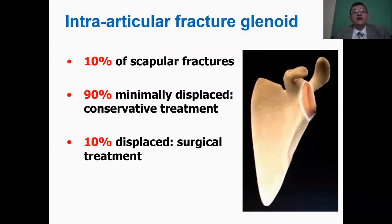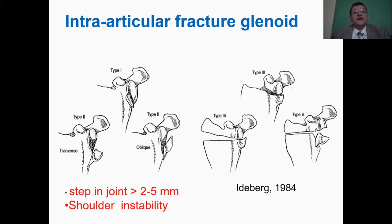Intraarticular fractures of the glenoid represent 10% of the scapular fractures, 90% of those are undisplaced, while the 10% are displaced and require surgical treatment. Ideberg classification describes five types of glenoid fractures. If there's an articular step-off of more than 2 to 5 millimeters or shoulder instability, this fracture should be fixed.